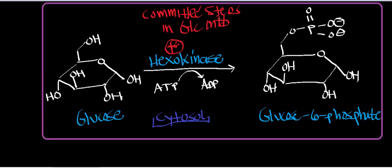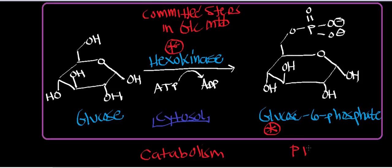If you're going to synthesize glycogen, you've got to use hexokinase, because glycogen ultimately comes from glucose 1-phosphate, which comes from glucose 6-phosphate, which obviously comes from glucose through this reaction. If you're going to catabolize glucose, you're going to have to use this enzyme — this reaction marks the first step in the catabolism of glucose. Also, if you want to use the pentose phosphate pathway, which is how you synthesize NADPH and ribose 5-phosphate (important for DNA and RNA synthesis), you've got to use this enzyme. So glucose 6-phosphate is really a branch point in many pathways.